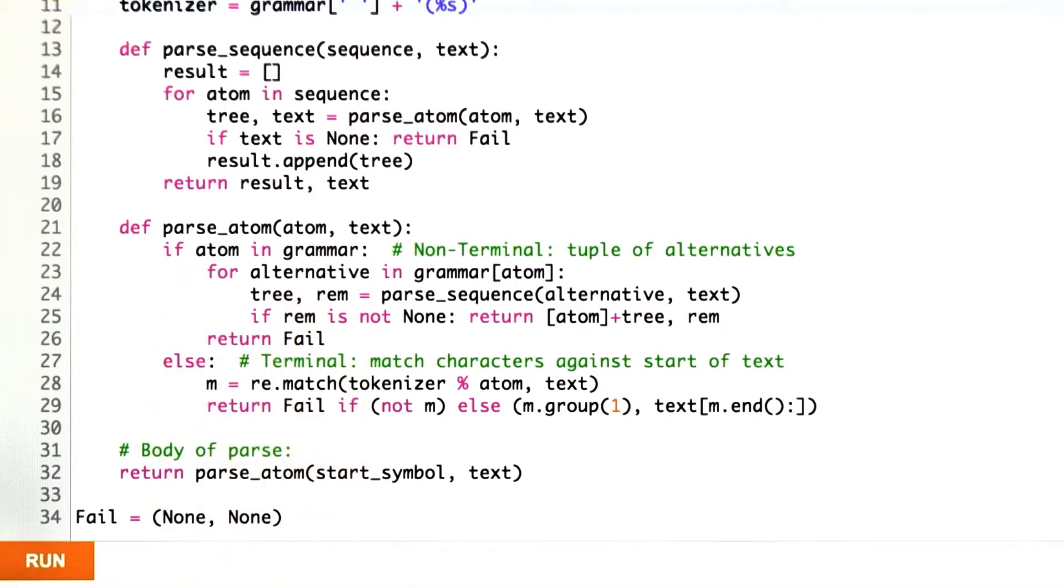Otherwise, if the atom is not in the grammar, then it must be a regular expression. We take the tokenizer that we built up before, we insert the atom, which is a regular expression, into that tokenizer and match it against the text. If there's not a match, then we fail. If there is a match, we pull out the matching part. That's going to be the tree. That's the token that we matched. We go ahead and we take the rest of the text after the match and return that as a remainder. This is the only place where the text actually advances, in this one spot where we're matching tokens against the input text.